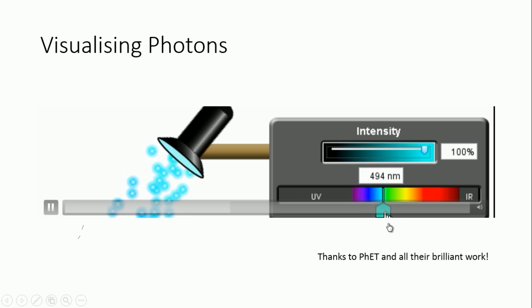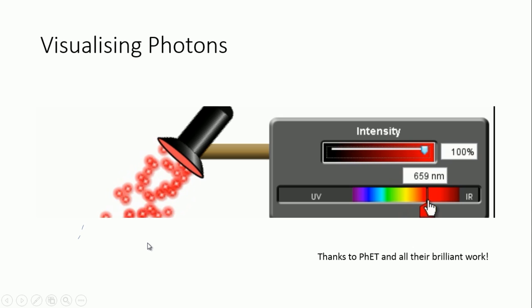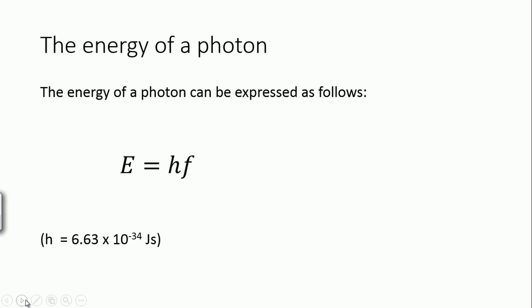If we change the frequency or the wavelength of the light, we can see that each individual photon is changing its color because the color of the photon is related to its wavelength. And if we reduce the intensity of the light, we can see that all we're doing there is reducing the number of photons that are being emitted by the light every second. Okay, so that's kind of a visualization of how you can see photons coming away from a light.